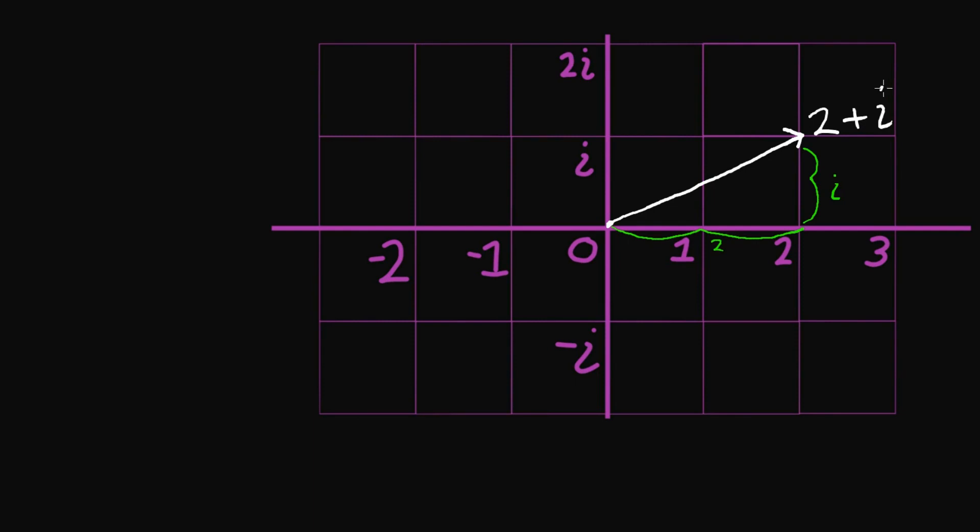I want to point out that it didn't actually matter which way I went. So for example if I had walked up here first, if I had walked up to i, then I had walked over to 2, I still end up at the same number. What we get is 2 plus i is the same thing as i plus 2.